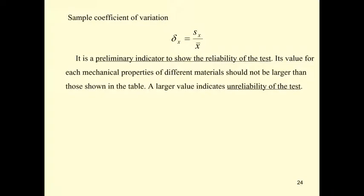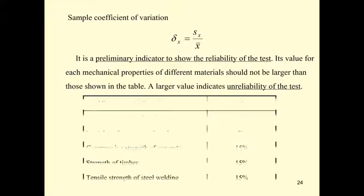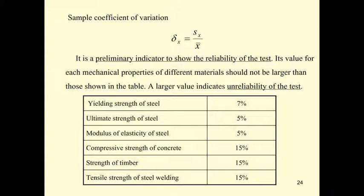Another index is the coefficient of variation. This tells how reliable the material is. With a small coefficient of variation, all data are close to the mean. With a large coefficient of variation, the data are distributed far from the mean. So if it is small, it is good; if it is large, it is unreliable.